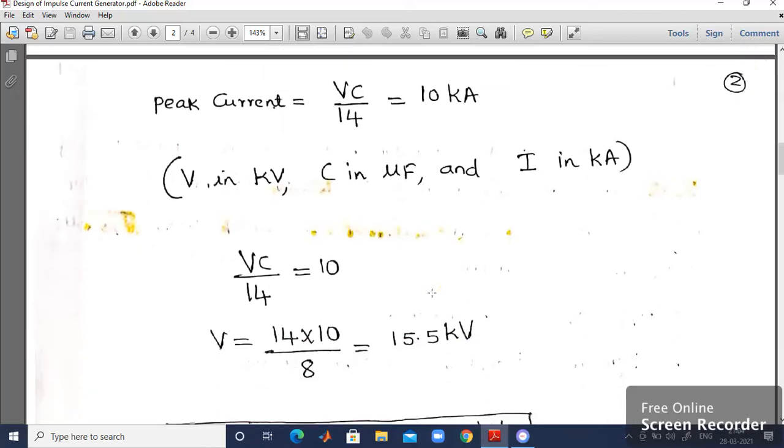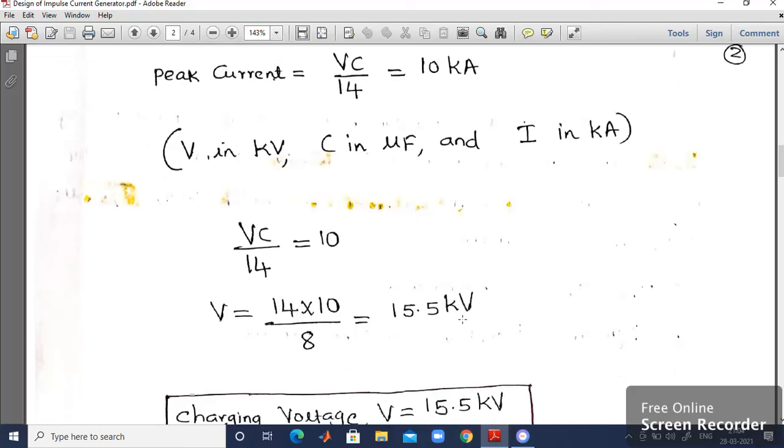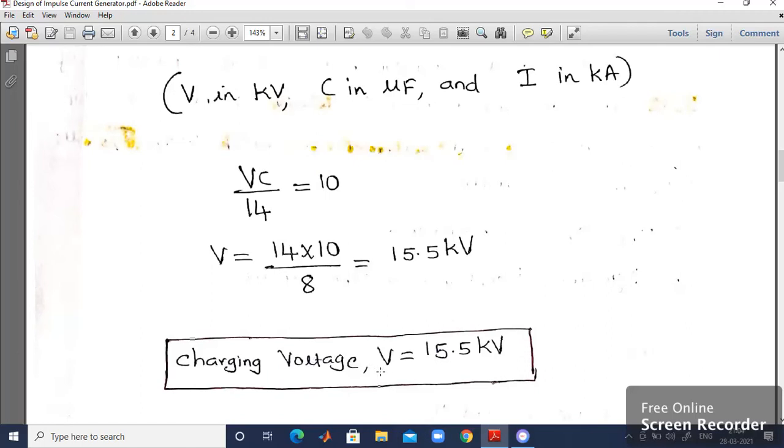From this what I have to do. I will be getting the value of voltage. What is the total charging voltage. So VC by 14 is equal to 10 kilo ampere. From this VC is equal to 14 × 10. From that expression I will be getting the value of VC equal to 14 × 10 divided by C. Therefore, I will be getting 15.5 kV. So charging voltage has been determined as V is equal to 15.5 kilo volt.